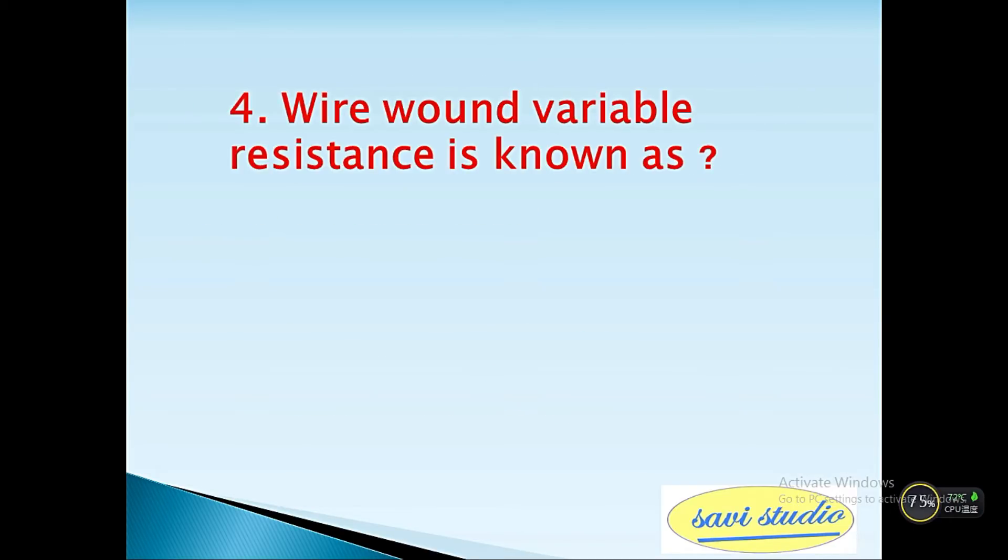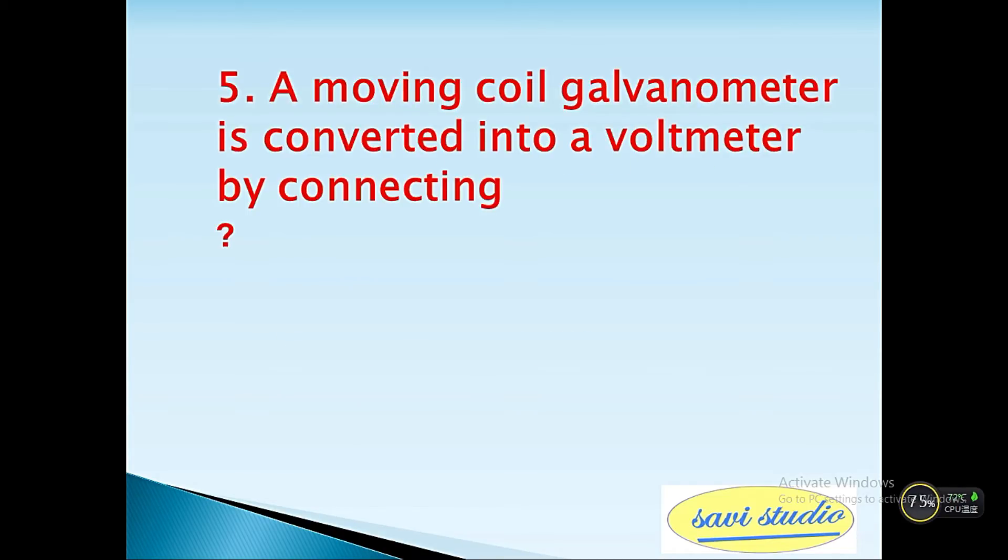Fourth question: Wire wound variable resistance is known as? Answer: rheostat. Fifth question: A moving coil galvanometer is converted into a voltmeter by connecting? Answer: a high resistance in series.